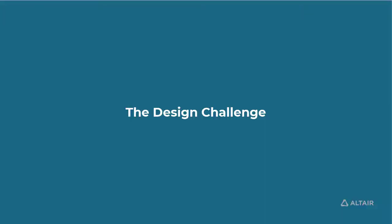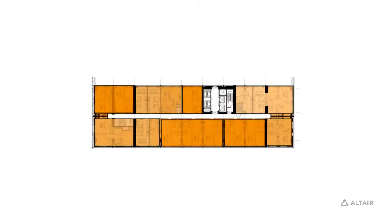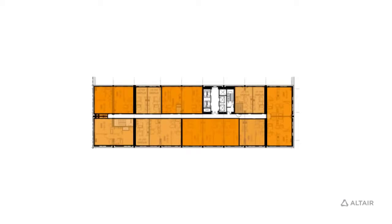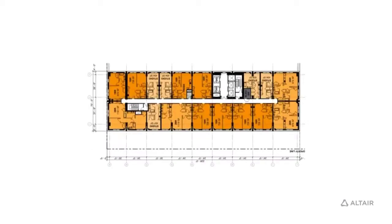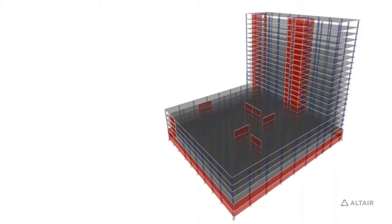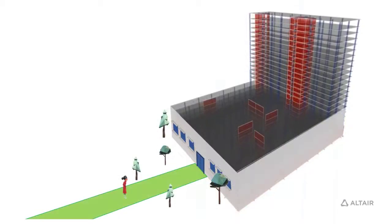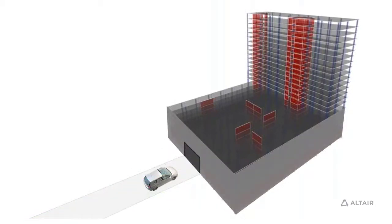The shear wall conceptual design, basically for buildings that use shear walls as a lateral force resisting system, requires coming up with a layout or location of walls in plan that works with different floor programming constraints. For example, in a mixed-use building, the upper levels may be residential and the lower levels may be dedicated to parking or retail.